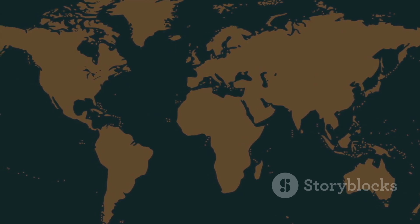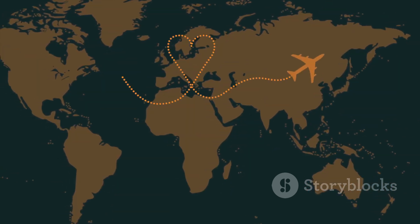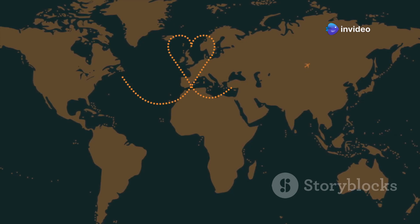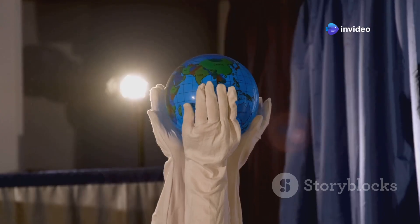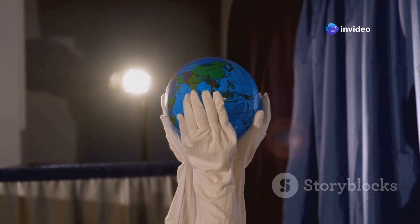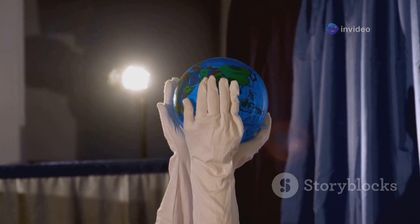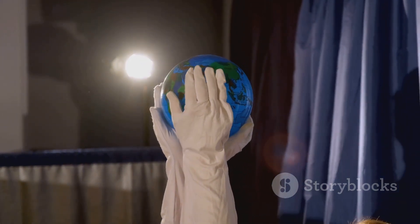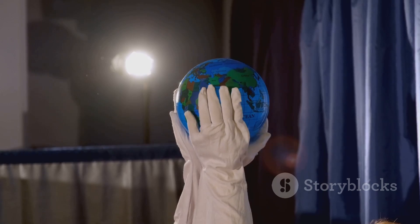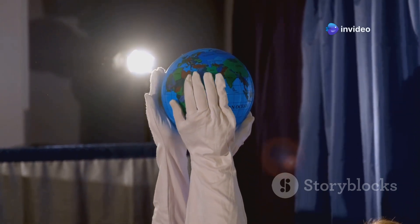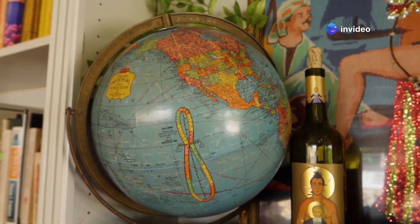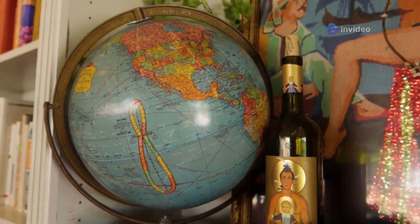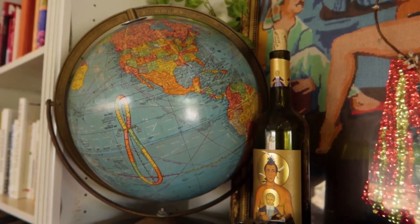Pilots and navigators have to account for the curvature of the Earth to find the most efficient routes. This is why flight paths often look curved when you see them on a flat map. Imagine stretching a string across a globe — the string would naturally form a curve, not a straight line. This curve is known as a great circle route, and it represents the shortest distance between two points on a sphere.